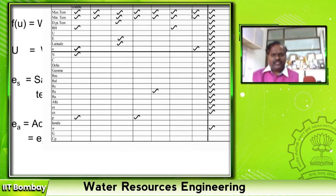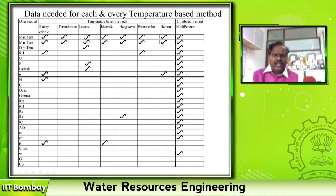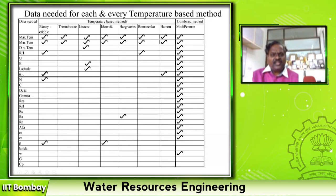I gave a comparative table showing how many data points or what data is required, and what parameters you can take from FAO publications. The bold line indicates measurements: maximum temperature, minimum temperature, relative humidity — dew point temperature, both maximum and minimum — wind speed, evaporation, latitude, and actual sunshine hours N.